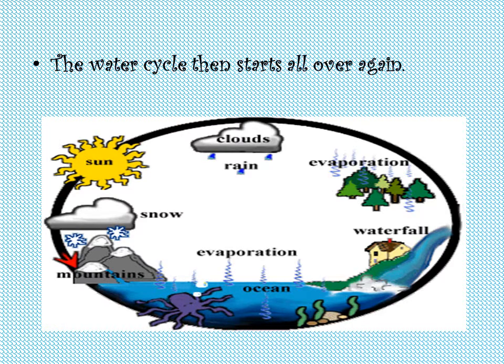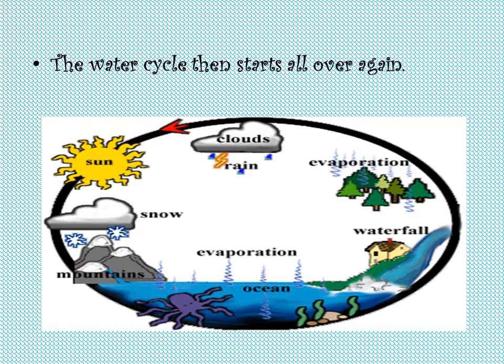Evaporation, condensation, precipitation and collection — the four stages of the water cycle.